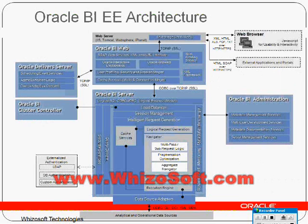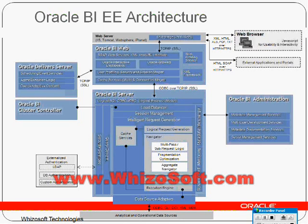This is the architecture diagram. This is a very robust architecture diagram where we are covering most of the components — some of them being optional — but that covers all the features we have with OBIE.